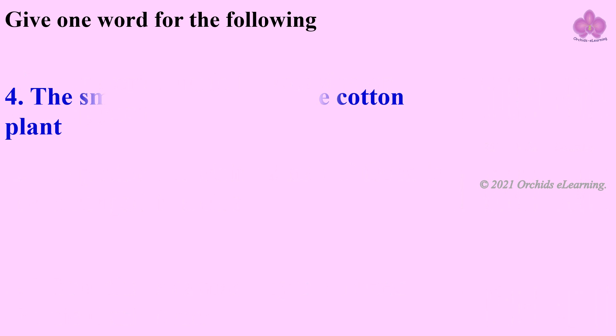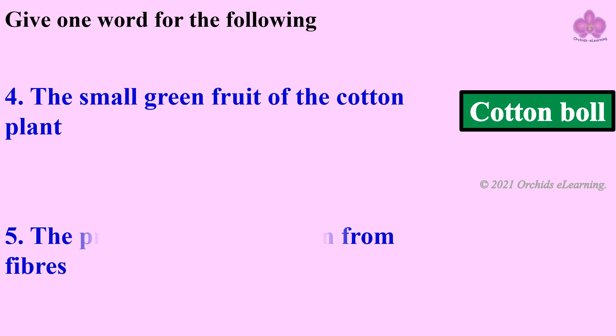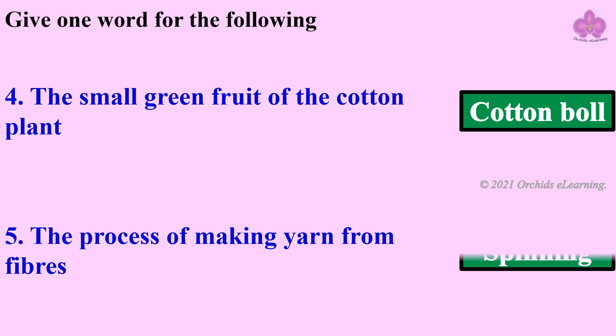The small green fruit of the cotton plant: cotton boll. The process of making yarn from fibers: spinning.